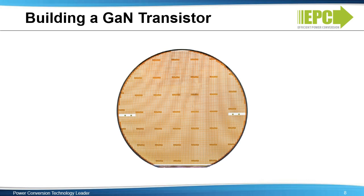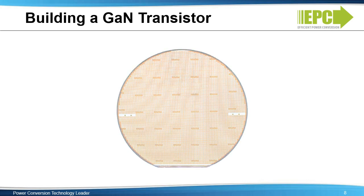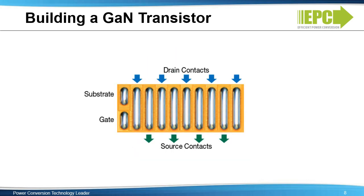Following solder bar formation, the completed wafer looks like the example here. The individual devices are singulated and the final chip scale transistor may look like this. This device is now ready to be soldered onto a printed circuit board or onto a lead frame to be incorporated into a plastic molded package.